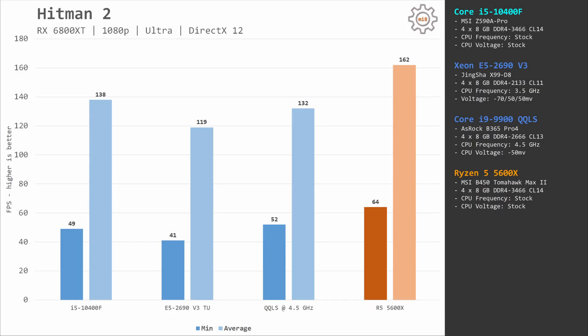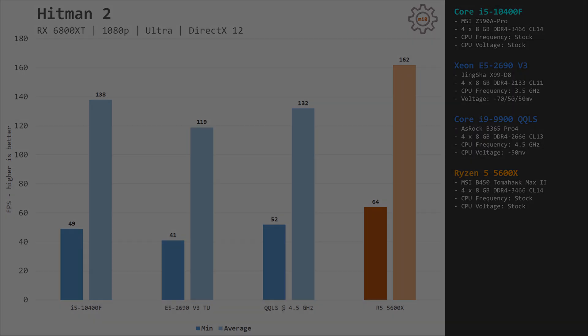Hitman 2. Unfortunately while benchmarking Xeon E5-2690v3, something happened with my video capture card — the recorded video has too many artifacts and I am not able to show it. i5-10400F delivers 48 and 138 FPS while Xeon E5 has 41 and 119 FPS. Even though Hitman 2 is able to load multiple CPU cores and is a very CPU demanding title, 12-core Xeon E5-2690v3 is not able to match 6-core Core i5-10400F. The difference between the CPUs is 5 to 15 FPS.